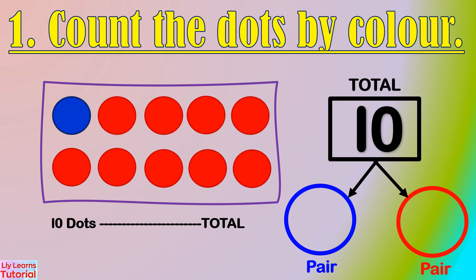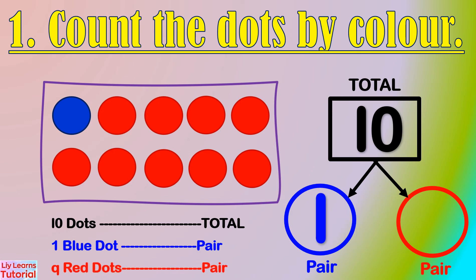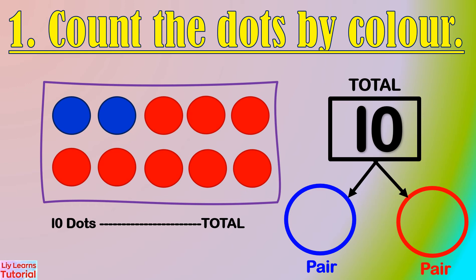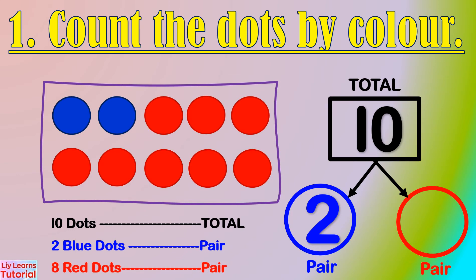It's given that we have a total of 10 dots. Now we count the dots by color. There is 1 blue dot and 9 red dots. The number pair is 1 and 9. Here, there are 2 blue dots and 8 red dots. The number pair is 2 and 8.